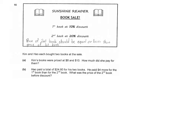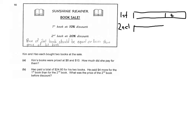Let's draw a model. We have the first book and the second book. The first book is more expensive by $4 compared to the second book, and the total cost is $24.80.